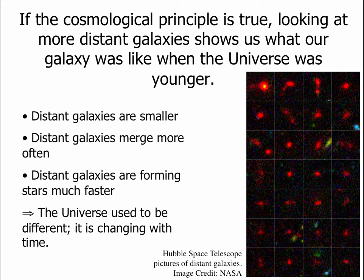So the Hubble telescope has spent a lot of time studying these very distant galaxies, and what it has found is that distant galaxies are smaller in both size and mass than galaxies today. We see that distant galaxies are merging much more often than galaxies are today, and we see that distant galaxies are forming stars much faster than galaxies are today. And so without much further thought, what this tells us is that the universe used to be different than it is now. In other words, the universe is changing over time. It's not static. It's not staying exactly the same.